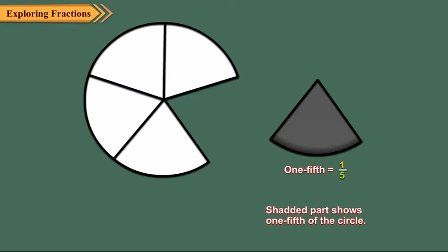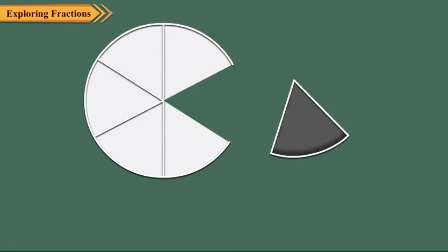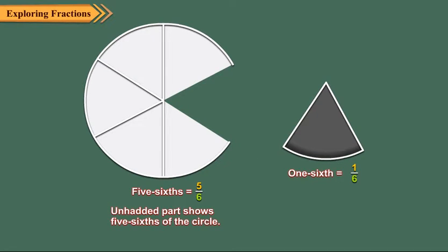Do you know what part of the circle is unshaded? Since out of the six equal parts, five parts are unshaded, so the unshaded part represents five-sixths. It is written as five upon six.